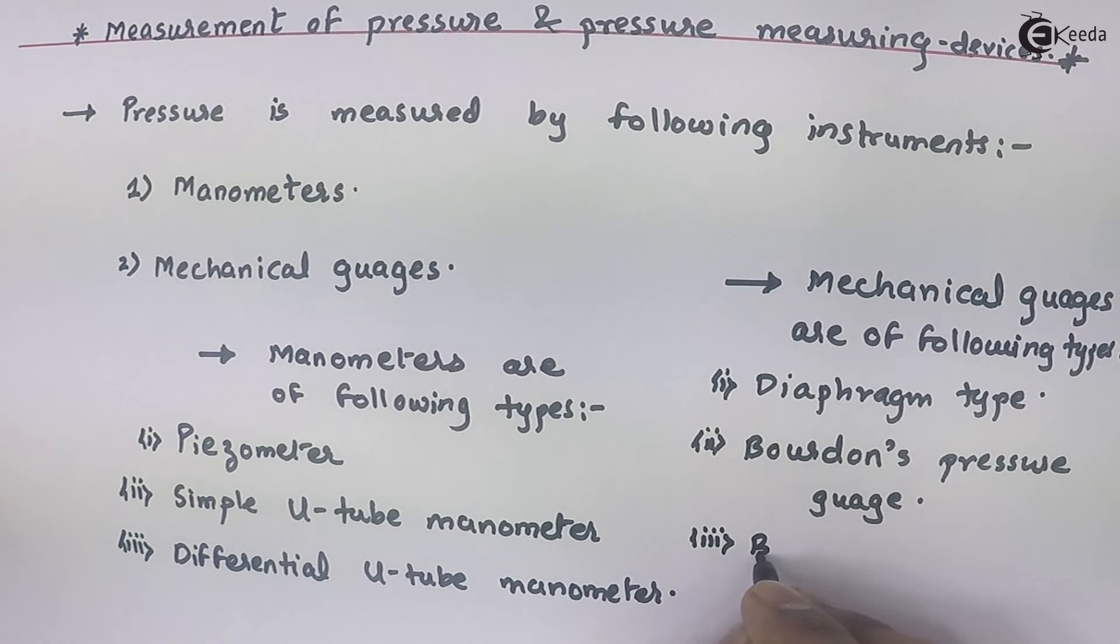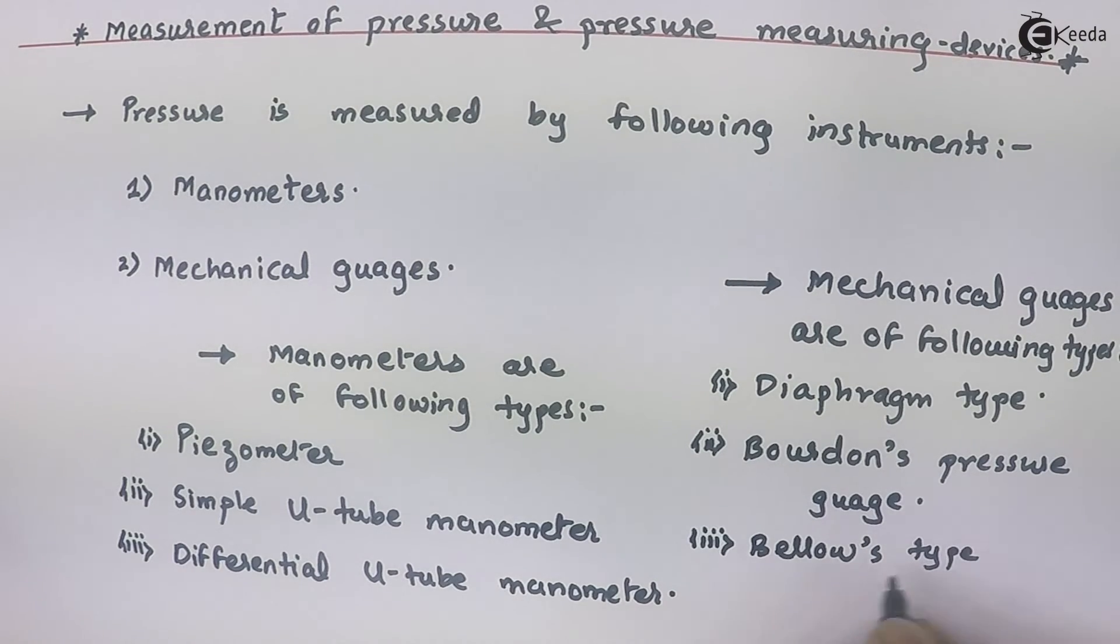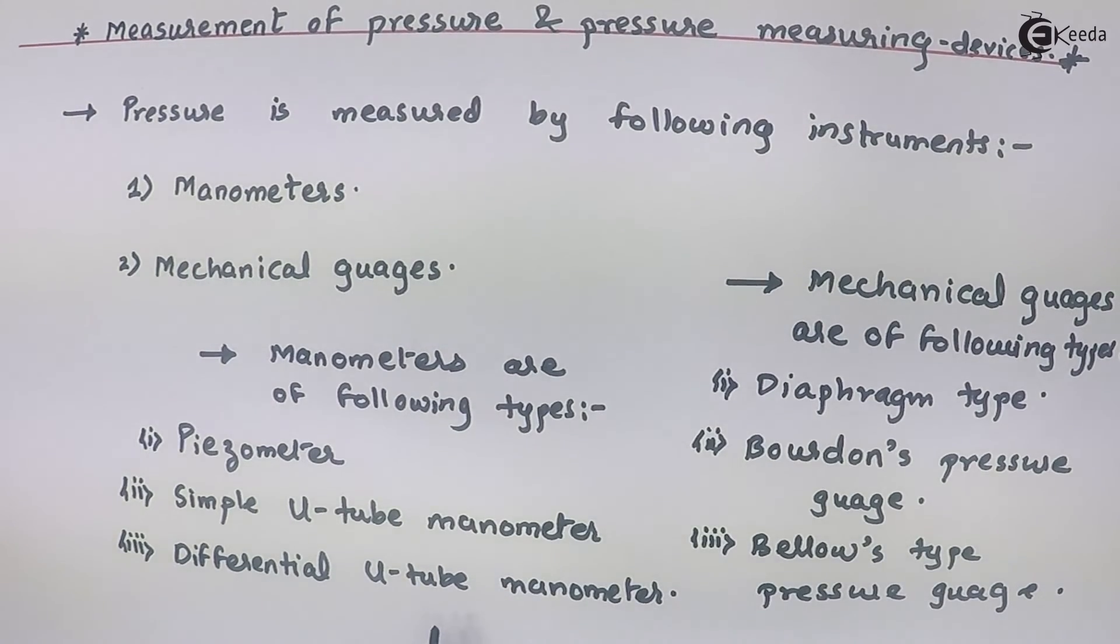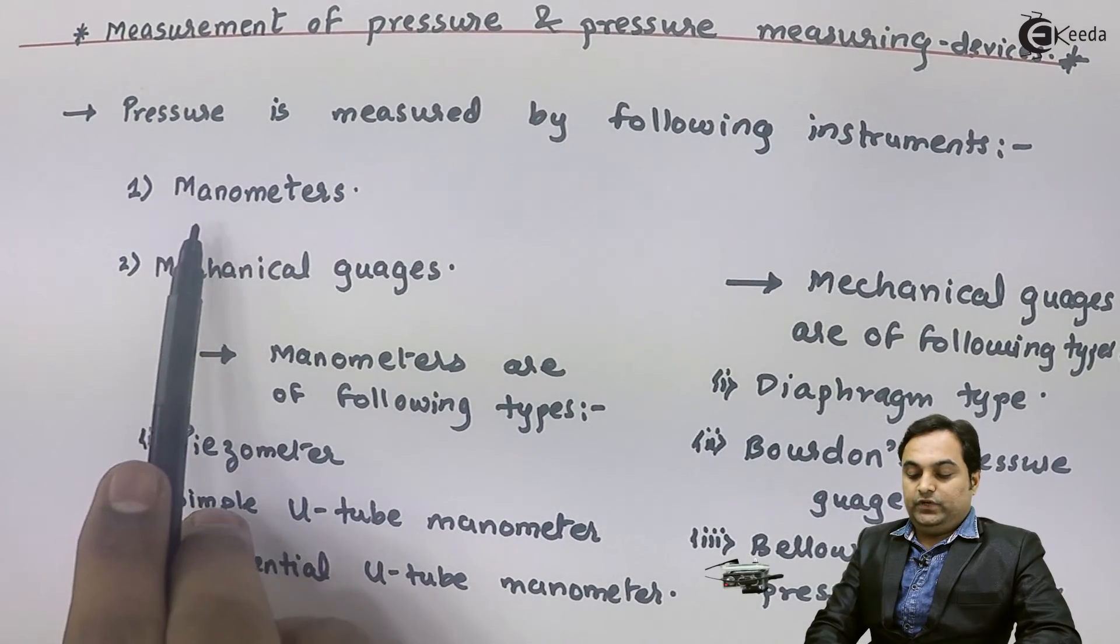Then we have bellows type pressure gauge. So here I have mentioned two sets of measuring devices - first heading, manometers, and the second one, mechanical gauges.